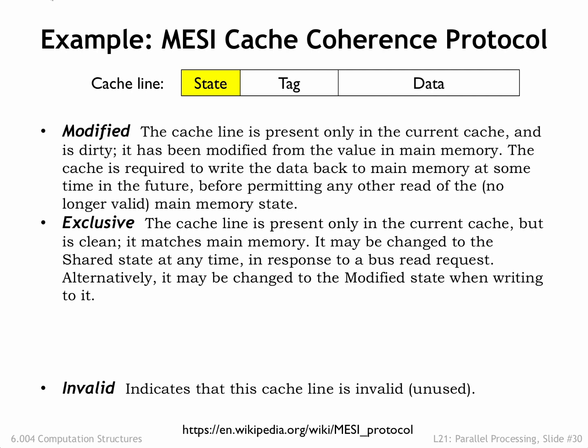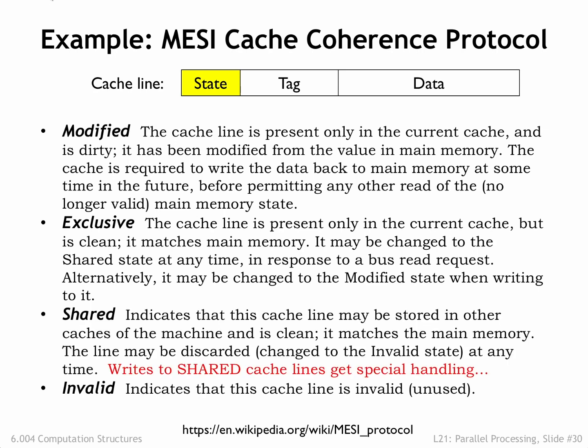If the cache line state is modified, that means the cache line data is the sole valid copy of the data. This corresponds to setting both the dirty and valid bits to 1 in our original cache implementation. To deal with sharing issues, there's a fourth state called shared that indicates when other caches may also have a copy of the same unmodified memory data.